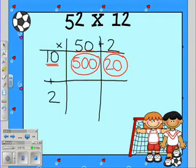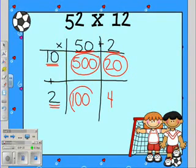Then we go down to our 2. 2 times 50. If we know that 2 times 5 is 10, then we know that 2 times 50 is 100. 2 times 2 equals 4. And we circle our answers.